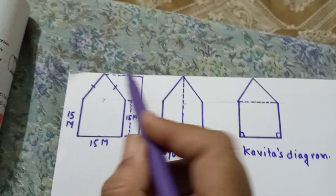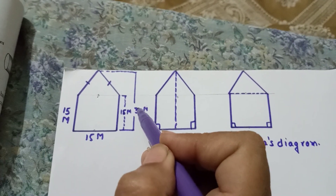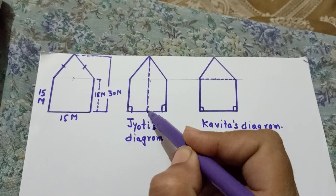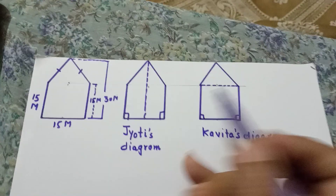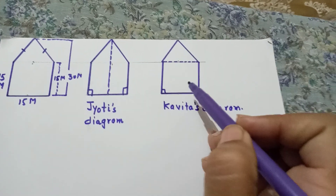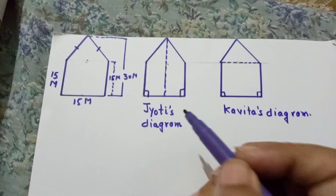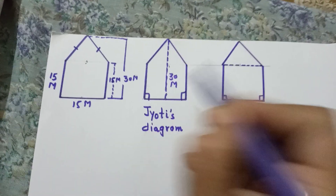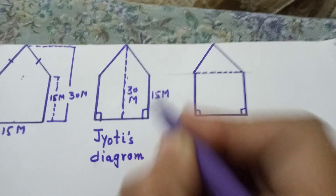The total height is 30 meters. Jyoti drew a line from one vertex to the opposite side and divided the pentagon into two trapeziums. Kavita joined a portion differently, dividing it into one triangle and one square. First, we will find the area using Jyoti's diagram. In her diagram, this length is 30 meters and this side is 15 meters.